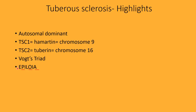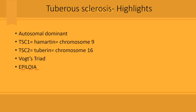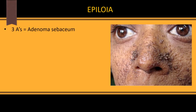The three A's are important to remember. Adenoma sebaceum is a facial angiofibroma — tuberous sclerosis forms hamartomas everywhere. Adenoma sebaceum is classically located along the bridge of the nose and on either side.